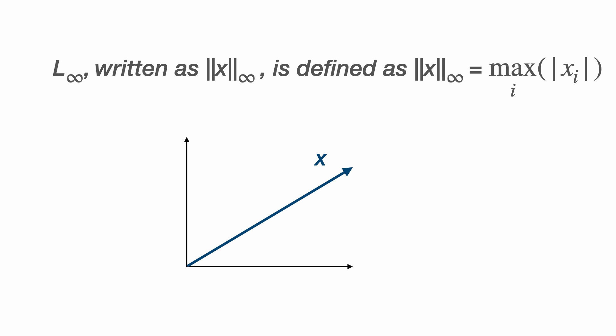So for example, here we have a two dimensional vector x with two components x1 and x2. Since x1 is greater than x2, the L infinity norm is simply the absolute value of x1.